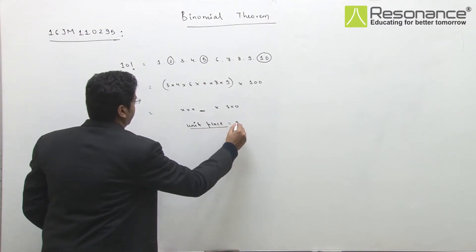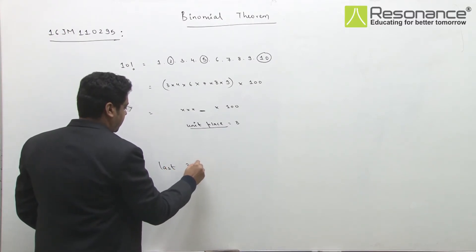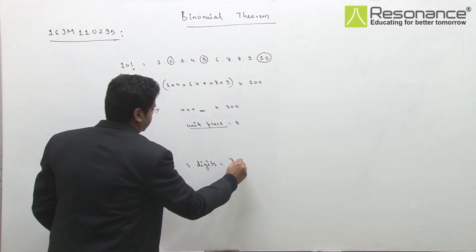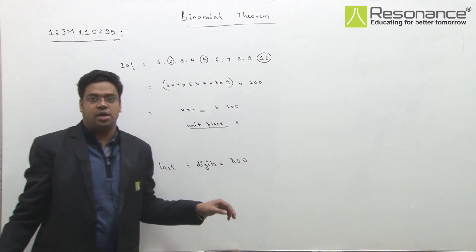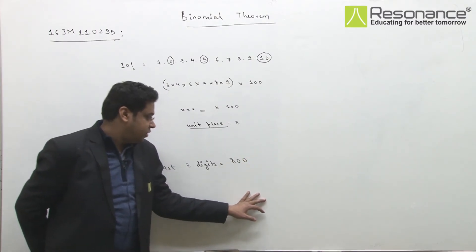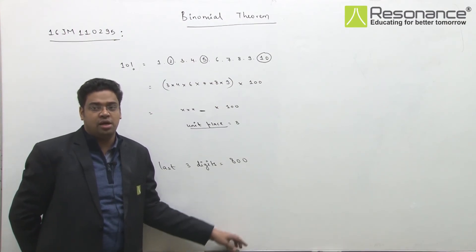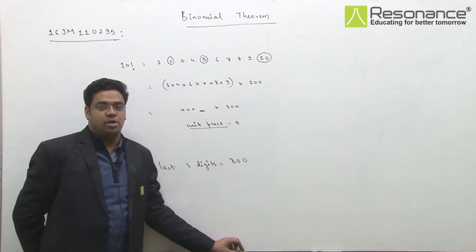Unit place will be equal to 8. So last three digits, what we have to do is this number of 8, 0, 0. Then our final answer will be the number of 8, 0, 0. That will be the last three digits of 10 factorial.